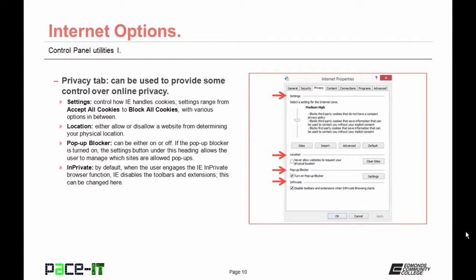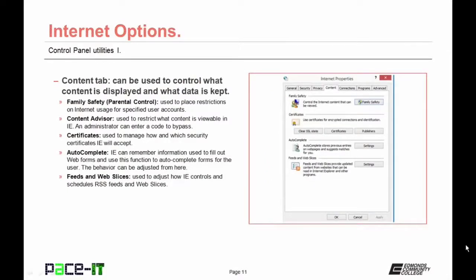The Content tab controls what content is displayed and what data is kept. The Family Safety section (also known as Parental Control) places restrictions on Internet usage for specific user accounts. Some versions have Content Advisor, which restricts what content is viewable in Internet Explorer with an administrator code to bypass. The Certificates section manages which security certificates Internet Explorer will accept. Internet Explorer can remember information for web forms using Autocomplete — this behavior can be adjusted here. The Feeds and Web Slices section adjusts how Internet Explorer controls and schedules RSS and Web Slices.